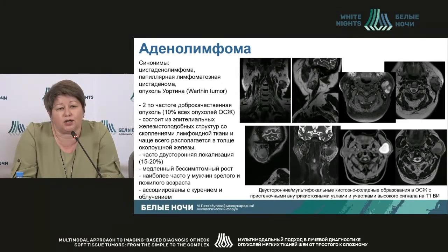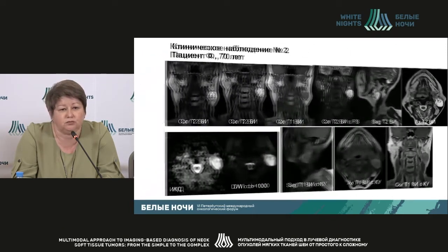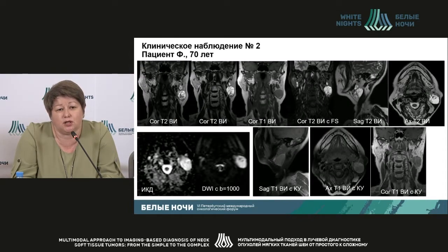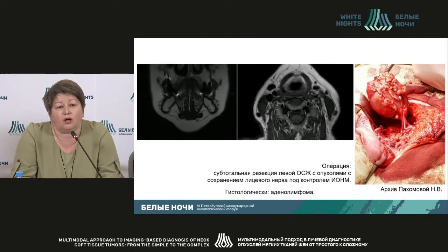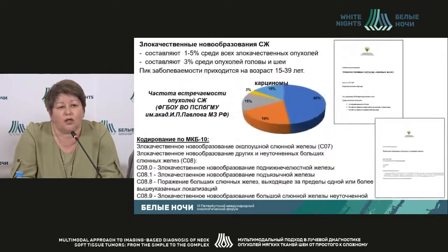Adenolymphoma is the second most frequent benign tumor of salivary glands. It consists of epithelial gland-like structures, usually in the parotid gland. Typical for it is double-sided localization, slow asymptomatic growth. It's more frequent in middle-aged and elderly men, and it's associated with smoking and irradiation. Clinical case: male patient, 70 years old, with multifocal neoplasms in both salivary glands, with multiple dissections and vegetation inside the structures, multiple partitions. Surgery was conducted. Adenolymphoma was the diagnosis after histology.